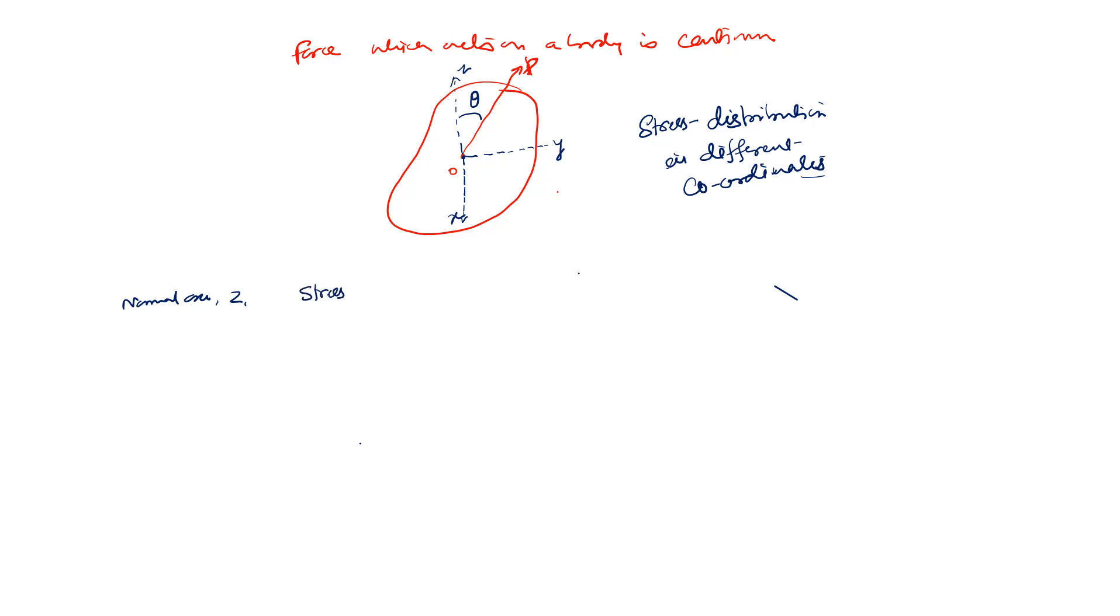Fine. Now in the normal axis, that is z direction, stress is equal to P cos theta, right? So stress in z direction will be P cos theta, and stress on surface will be how much? It will be P sin theta.